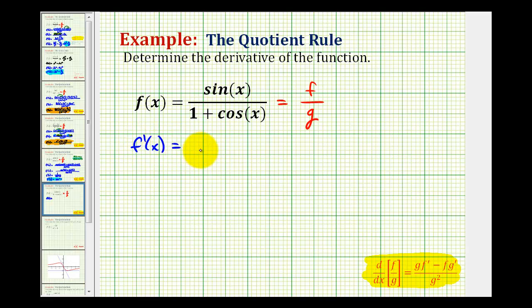let's start with the denominator. Notice how the denominator is just g squared or the denominator squared. So we'll have the quantity one plus cosine x squared.